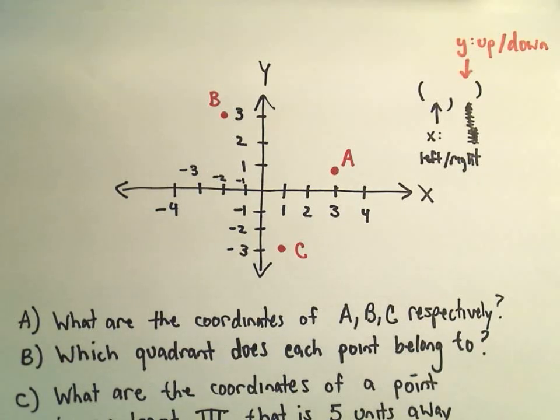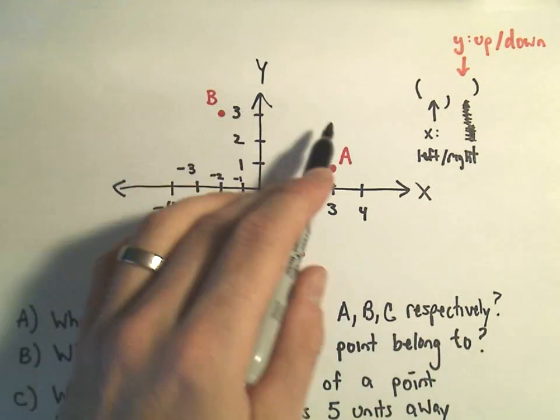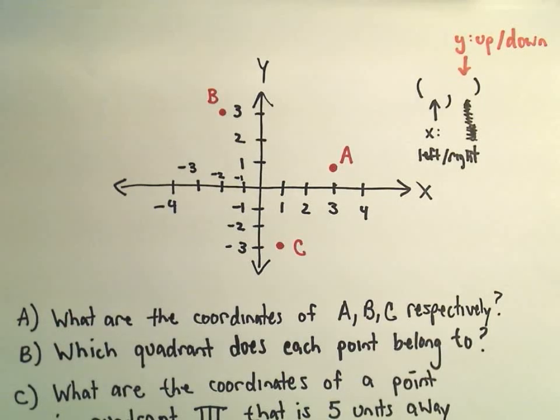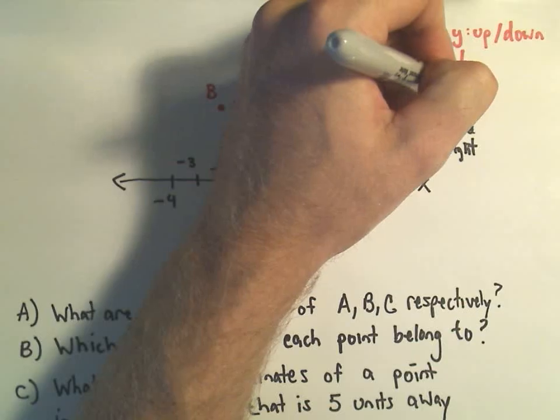The way I think about it is, the idea is any point in the plane, any point on this piece of paper can be described uniquely using what we call coordinates. The way we write a coordinate is we put it in parentheses.